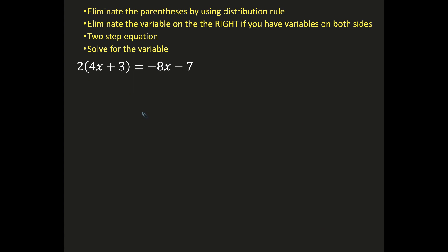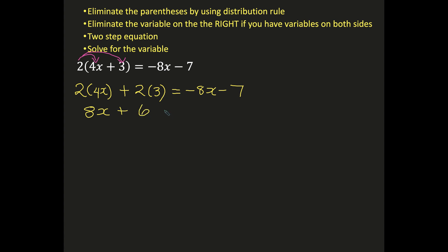Let's take a look at another problem. I have 2 times (4x plus 3) equals negative 8x minus 7. My first step is to distribute the 2 within the parentheses: 2 multiplying 4x, plus sign because the 2 is positive, multiplying the 3. That equals negative 8x minus 7. So 2 times 4x is 8x, plus 2 times 3 is 6, equals negative 8x minus 7. Now I notice I have 4 terms and a variable on the left and a variable on the right.